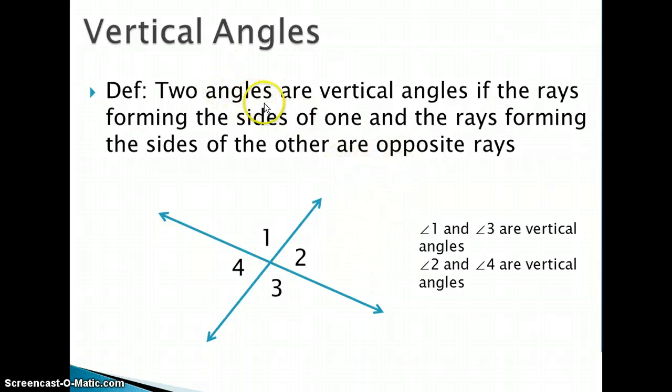So speaking of vertical angles, two angles are vertical angles if the rays forming the sides of one and the rays forming the sides of the other are opposite rays. So what that's saying is that if we had a ray right here and another ray right here, these are my opposite rays.